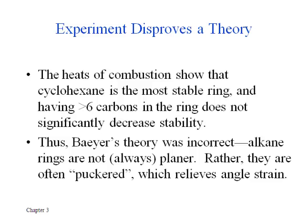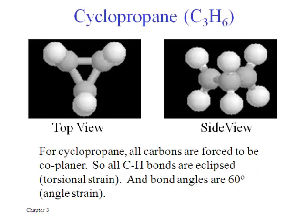We'll start with the three-carbon situation: cyclopropane, a very strained molecule. Because there are only three carbons, we have to have a 60-degree angle, and there's really nothing that molecule can do to relieve that. There's lots of angle strain, and the side view shows lots of eclipsed bonds as well. So cyclopropane is not a very happy molecule — it has torsional strain because of the eclipsing, and a lot of angle strain because 60 degrees is nowhere near the 109 degrees that a tetrahedrally bonded carbon would prefer.